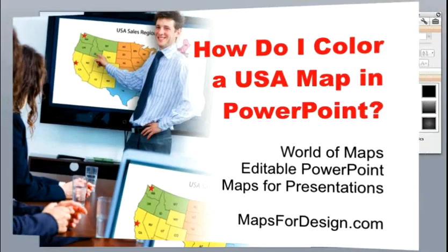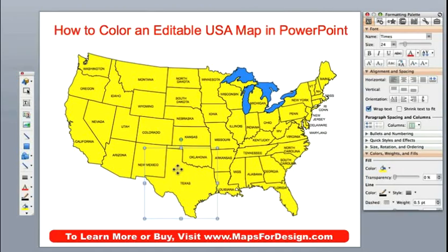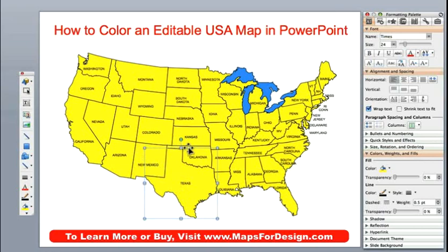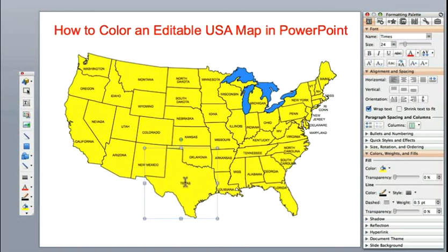Today we're going to be working with one of our USA maps and this is a completely editable map. Every element on here is individual and what that means is that I can click on it with my pointer. You can tell something is selected because you'll see those eight handles are on the outside, and this can be pulled out to individual objects that can be customized and changed.